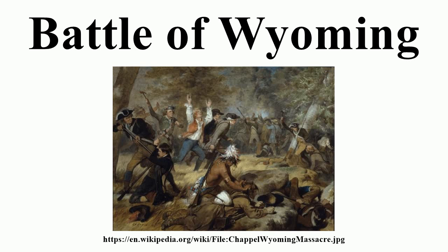All were buried in a common grave. Out of one thousand men available, John Butler reported only two loyalist rangers and one Indian killed, and eight Indians wounded. He claimed that his force took 227 scalps, burned one thousand houses, and drove off one thousand cattle plus many sheep and hogs. Of the sixty continentals and three hundred militiamen involved, only about sixty escaped the disaster. The Iroquois were enraged at the accusations of atrocities they said they had not committed, and at the militia taking arms after being paroled.